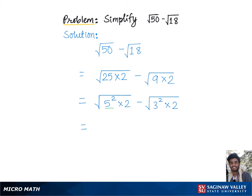2, which is equal to: this 5 squared can be pulled out of the square root as simply 5, and then we have √2, minus again this 3 squared can be pulled out of the square root as simply 3, and then we have √2. Now since we have like terms we can combine, meaning add or subtract